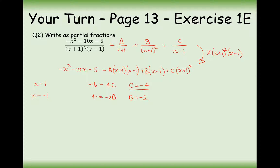All that's left is to calculate A. Using either of the previous values would also cancel out A, so I'll use an easy value — x equals 0. I get minus 5 equals minus A minus B plus C. Substituting B equals minus 2 and C equals minus 4: minus 5 equals minus A plus 2 minus 4, so minus 5 equals minus A minus 2. Adding 2: minus 3 equals minus A, therefore A equals 3.